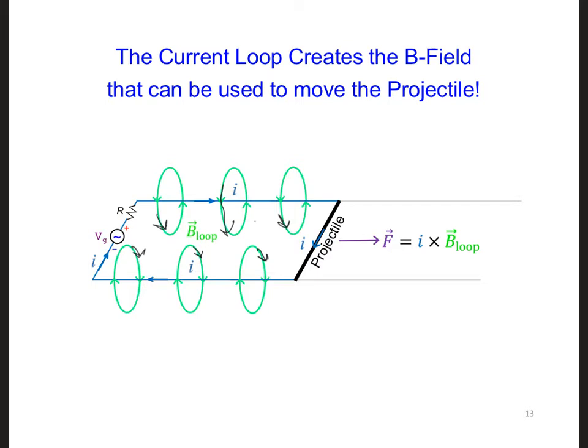So in summary, the current flowing in the current loop serves two functions. One, it gives the projectile, or our metallic blanket, a continuous supply of current. And two, it creates the B applied, which when combined with one, the first thing here, it generates the Lorentz force on the projectile.